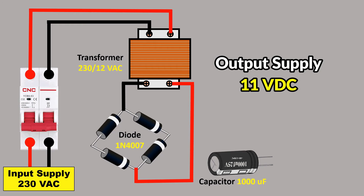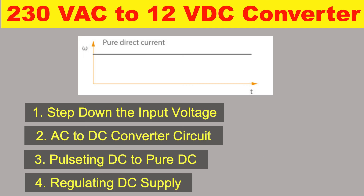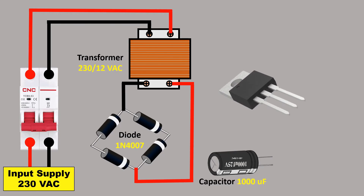If you want a constant voltage at the output — that is, 12 volt remaining at 12 volt — then you have to use a voltage regulator. The voltage regulator to use here is the LM7812. Let's understand how to do the connections with this voltage regulator.